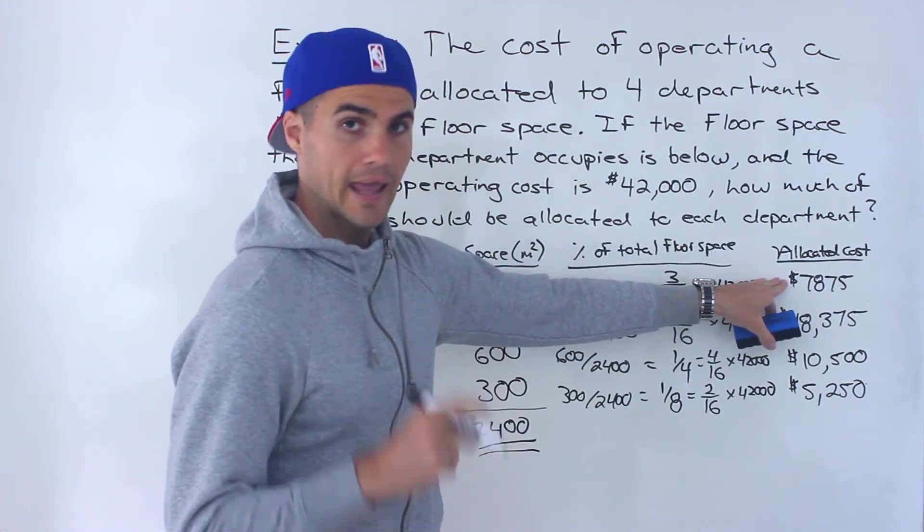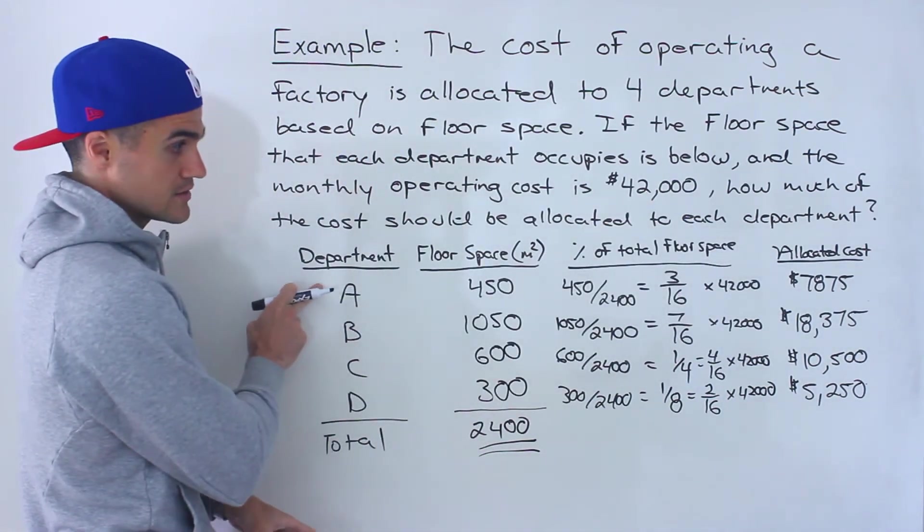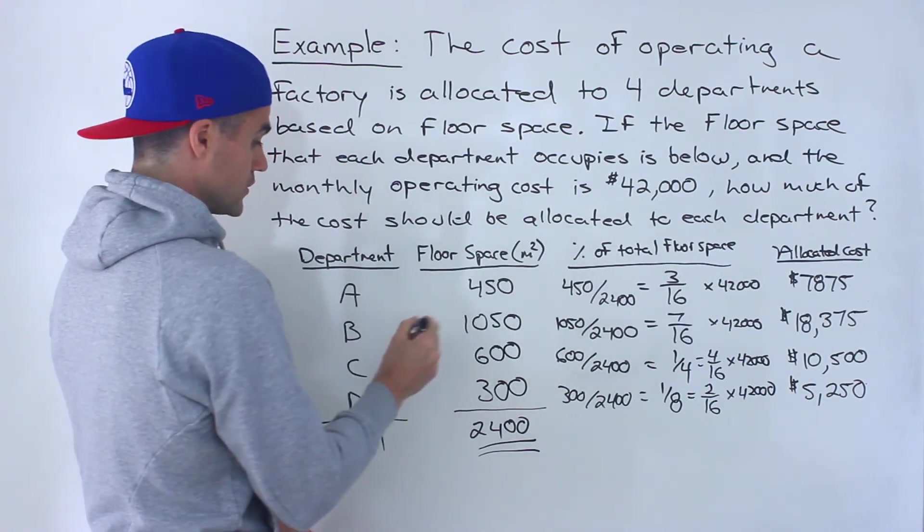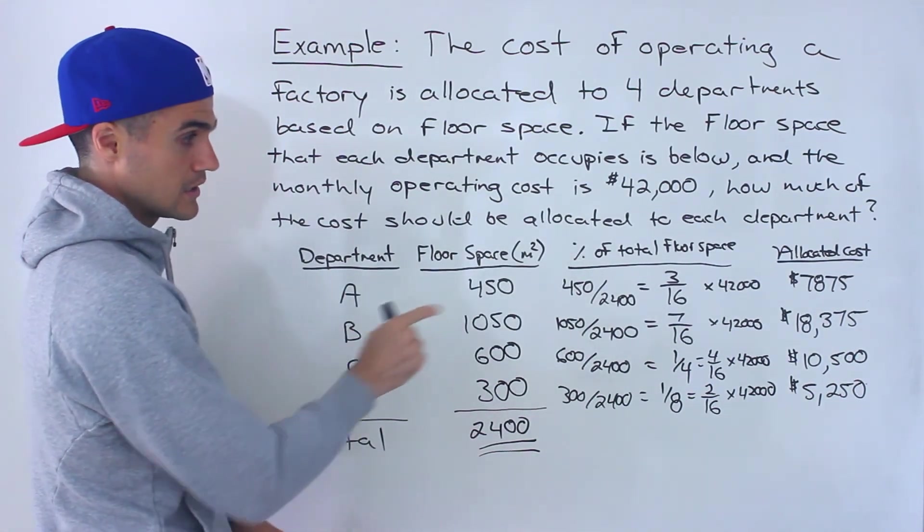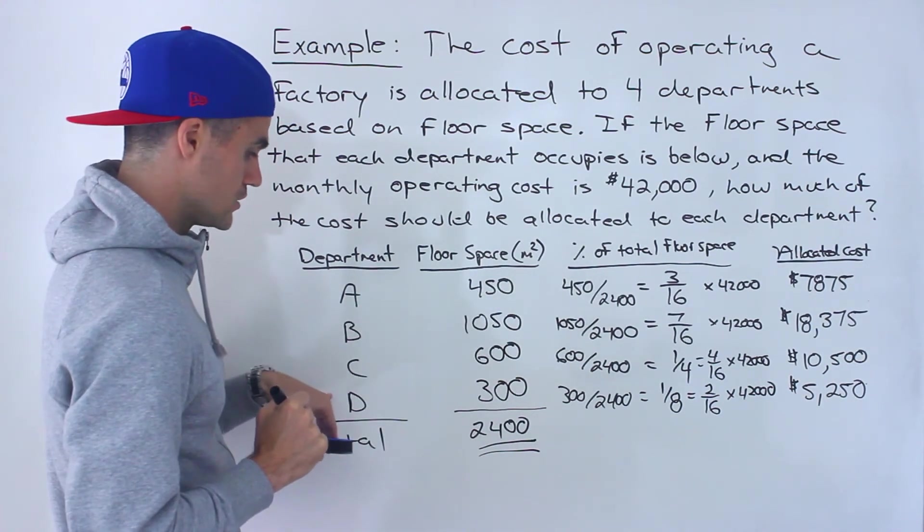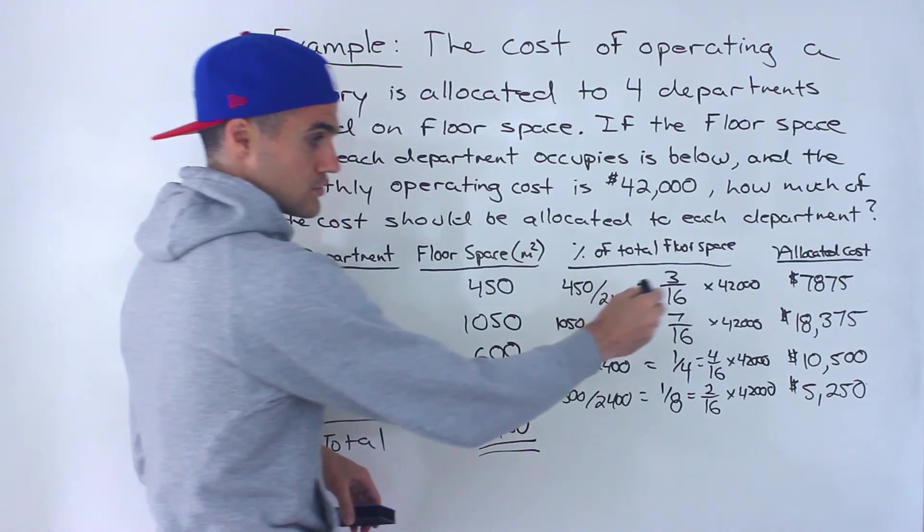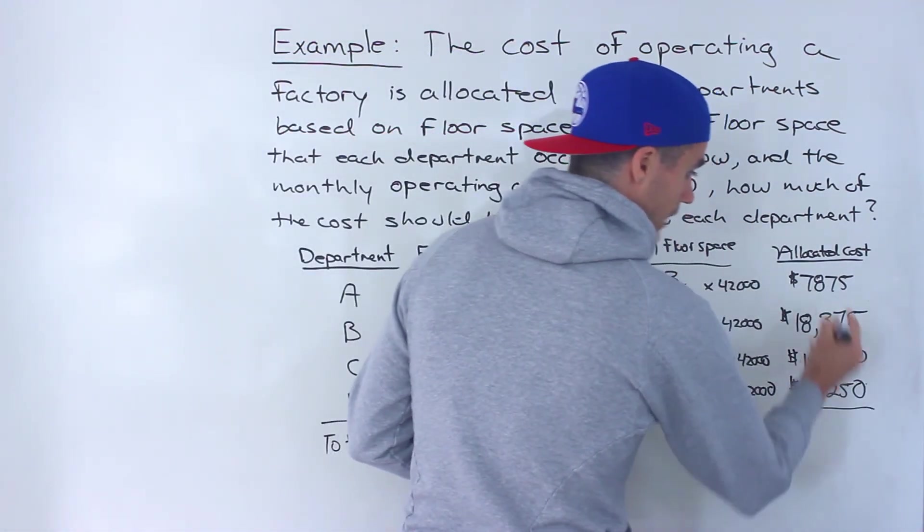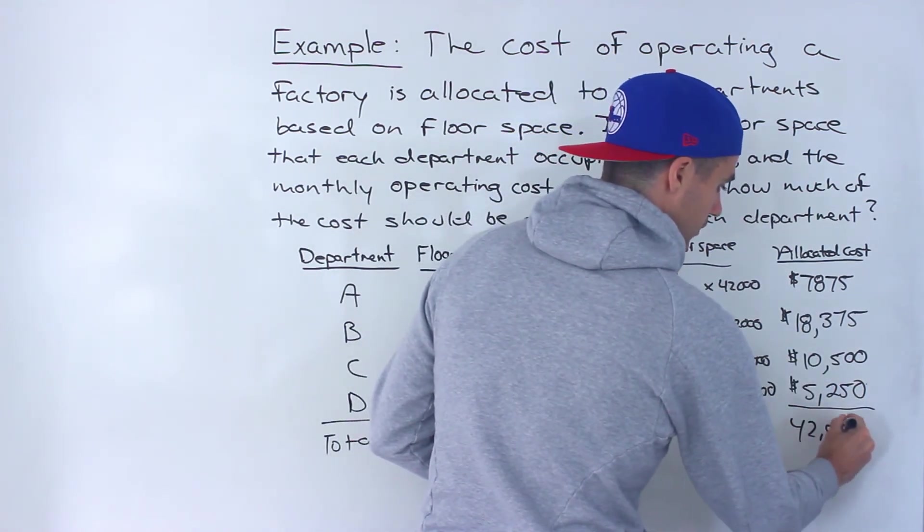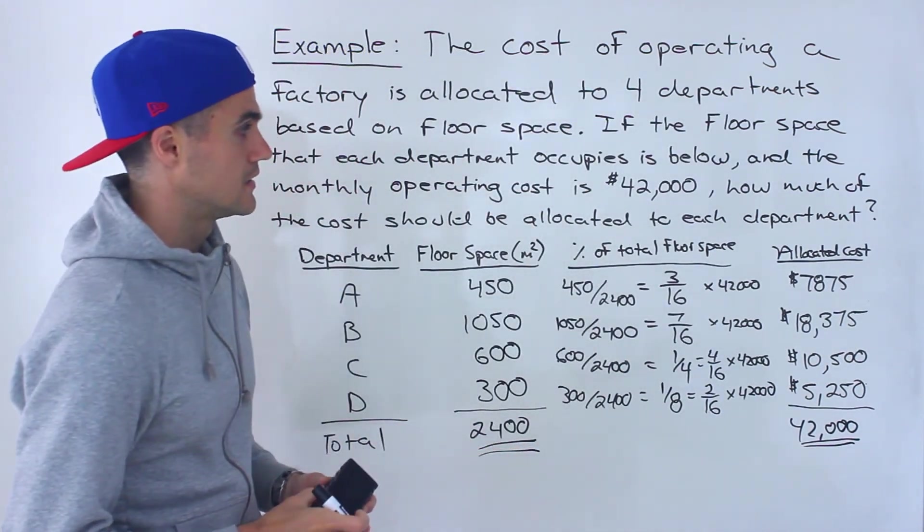So 7,875 of the 42,000 gets allocated to department A, 18,375 of the 42,000 goes to department B, 10,500 to department C, and then 5,250 to department D. And then if you want to check these, you can actually add them up. And notice when you add them up, you would end up with 42,000, which makes sense.